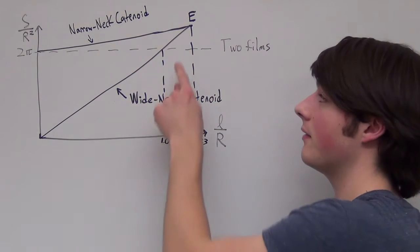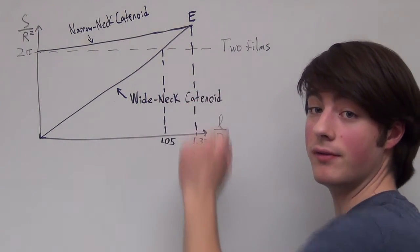Thus, we expect that at this point, the catenoid collapses down to the two films. Looking back at the footage though, it doesn't go right from the wide neck solution down to the two films.